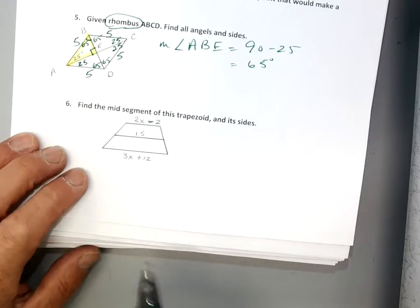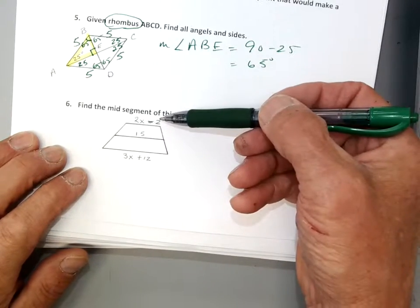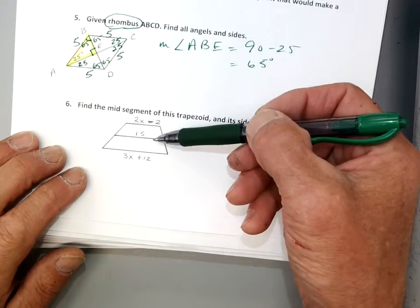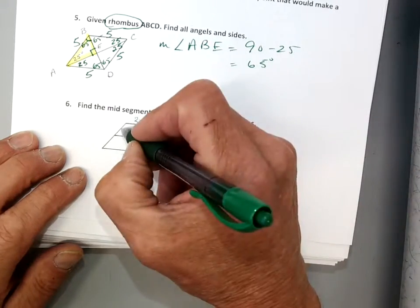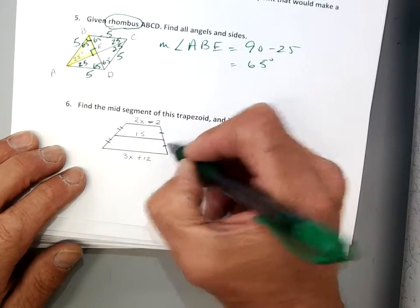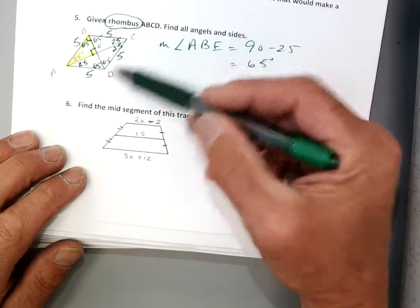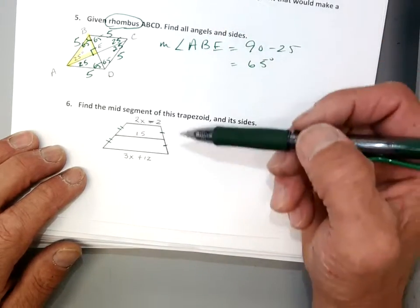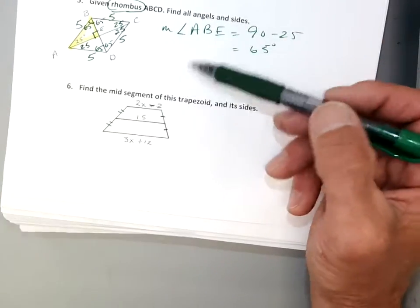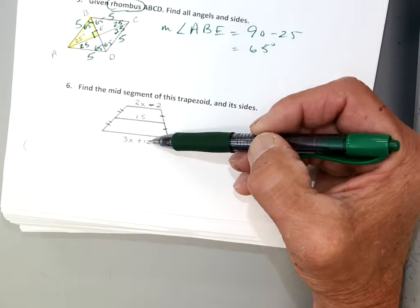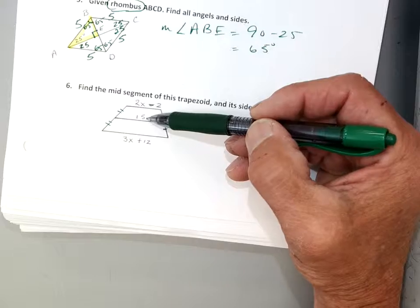The top plus the bottom divided by 2 equals the middle, okay? It's a mid-segment. Yes, R2? So with just a question on number 5, so basically on the rhombus, they're all equal? Yes. So basically you just have to find one answer. Right. Yeah. Okay, so you ready? Watch again. It's a mid-segment. Top plus the bottom divided by 2 equals the middle. You okay with that?